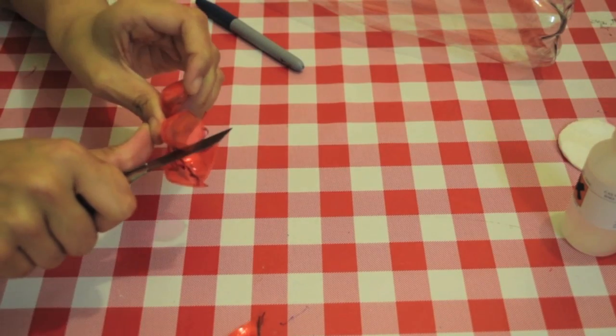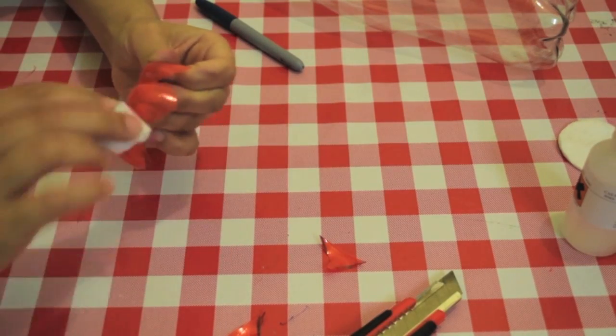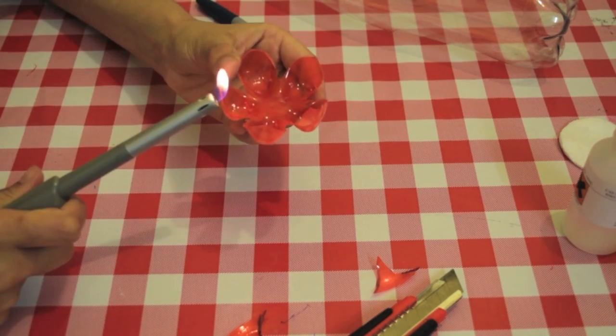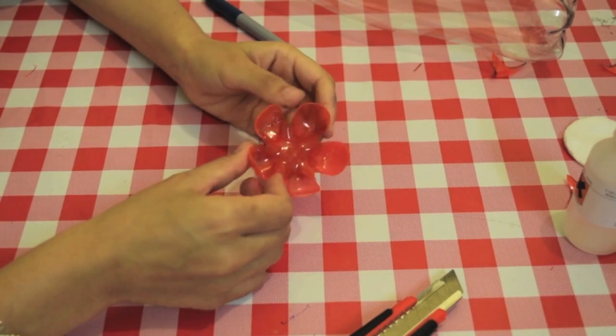You can also use a craft knife but you need to be extra careful. Using the rubbing alcohol, wipe off the guidelines. Now run a light flame along the edges to melt the sharp edges. And this is all done now. See?